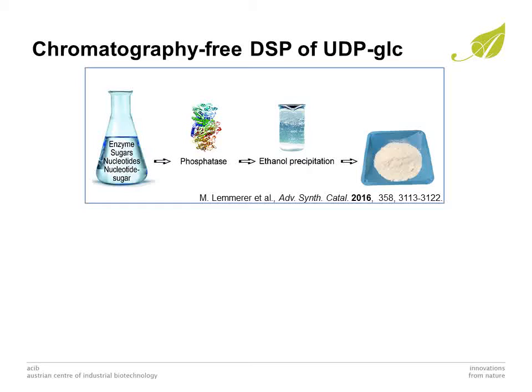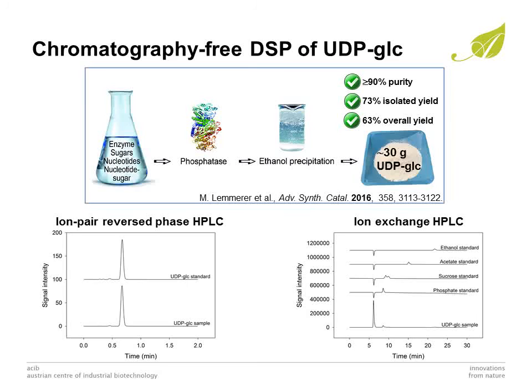We have recently developed a convenient and efficient chromatography-free downstream processing of nucleotide sugars from SuSy reaction mixtures. The downstream processing included alkaline phosphatase treatment for selective hydrolysis of the phosphomonoesters UDP and UMP into uridine and inorganic phosphate. Product separation from the remaining sugars sucrose and fructose and nucleoside uridine was accomplished by repeated UDP-Glucose precipitation with ethanol. 30 g of UDP-Glucose were isolated in a single batch with 90% purity and 73% isolated yield. The overall yield based on UDP was 63%. The remaining impurities in the final product were 0.6% of UMP, 6% of inorganic phosphate, 0.7% of sucrose, and 1% of ethanol.